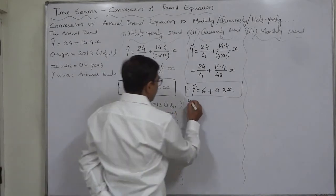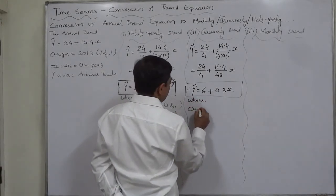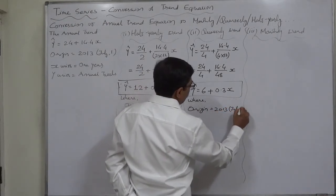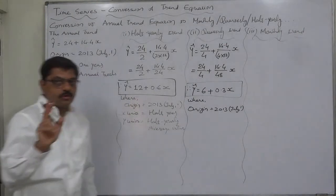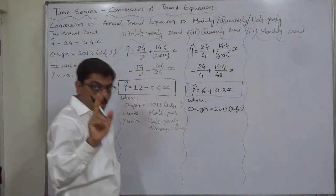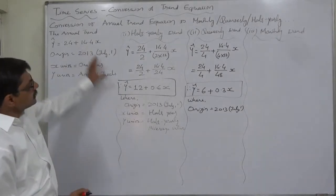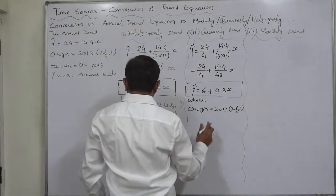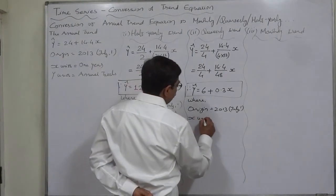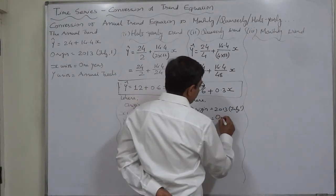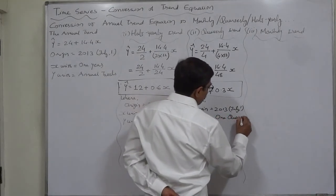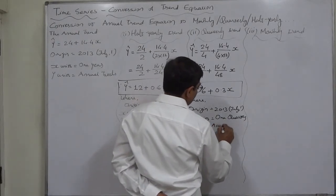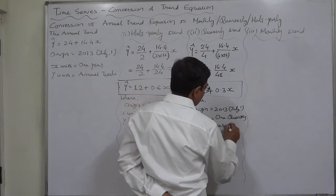The origin remains 2013 July 1 — there is no change in origin. We have not shifted the origin; we have just converted the annual trend into half-yearly and quarterly. So there will be no change in origin. The x units will be one quarter and y units will be average quarterly values.